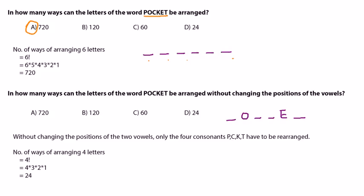A similar question: In how many ways can the letters of the word POCKET be arranged without changing the positions of the vowels? So there are 2 vowels. The positions of O and E should not be changed.